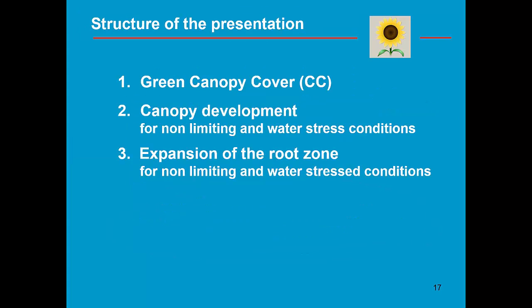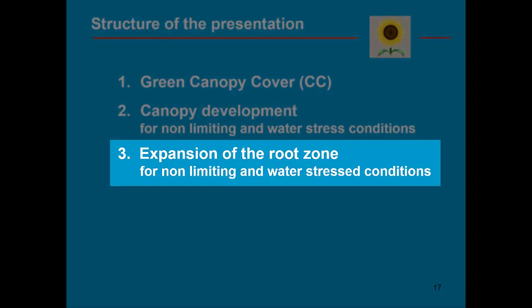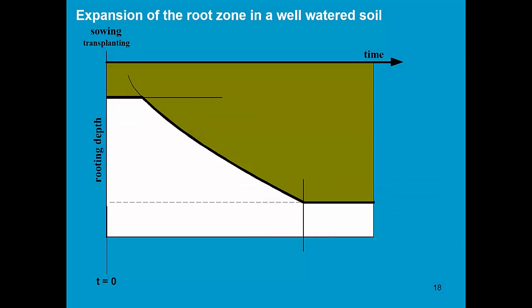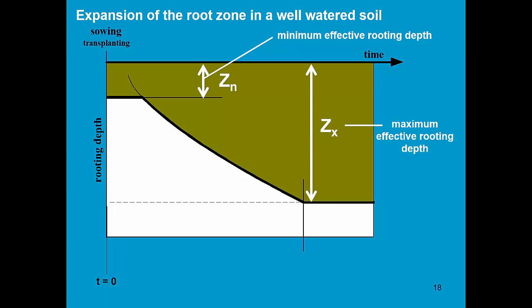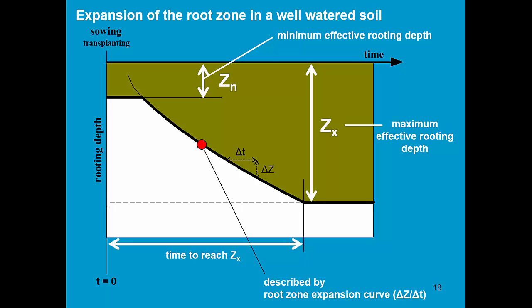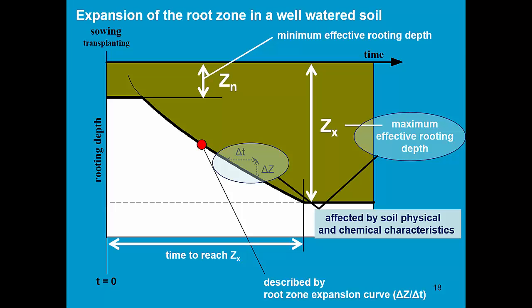In the last part of this module, let's have a look at the expansion of the root zone for non-limiting and water stress conditions. In this slide, the expansion of the root zone in a well-watered soil is displayed. We have a minimum effective rooting depth at sowing. It is the effective rooting depth, the depth from which the seedling can absorb water for its development. After a while, the maximum rooting depth will be reached. A function describes the root zone expansion curve in function of time. The root zone expansion and the maximum effective rooting depth are affected by soil physical and chemical characteristics and are described when tuning the root zone development in the crop file.